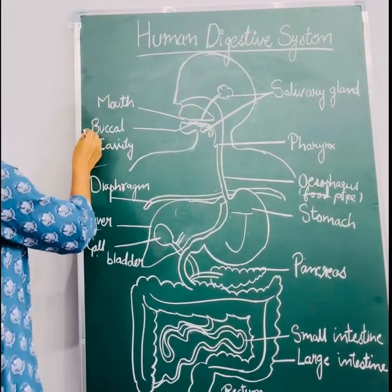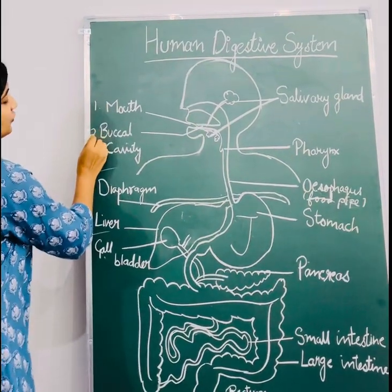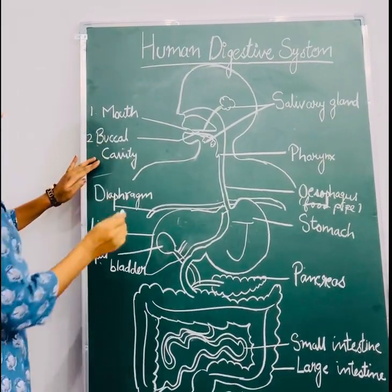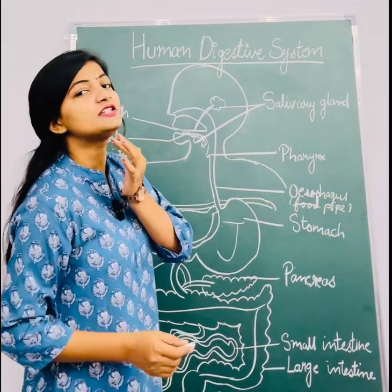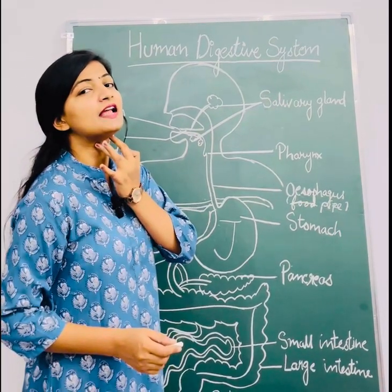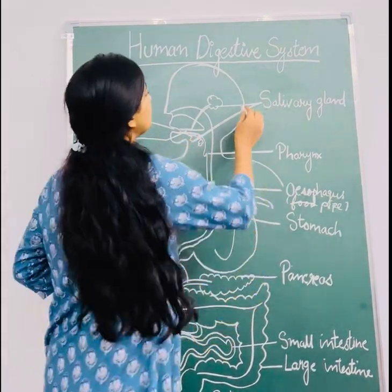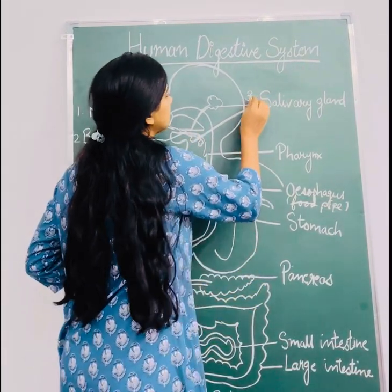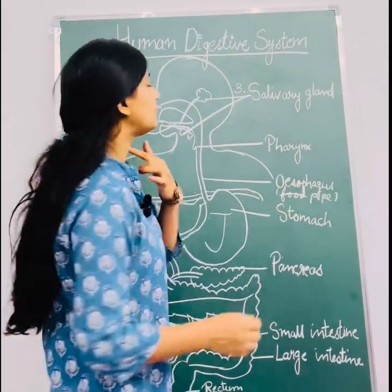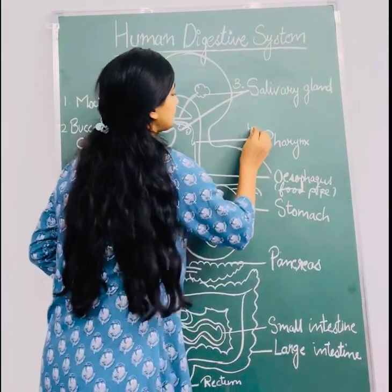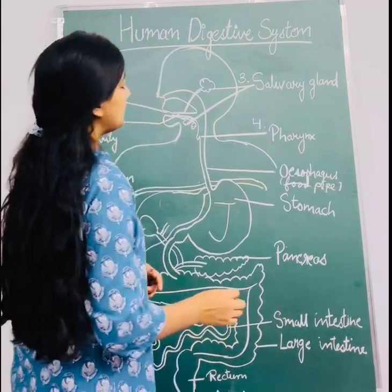The mouth leads to the buccal cavity. Below the buccal cavity there is a salivary gland, and on the upper side also there is a salivary gland present. Then comes the pharynx.